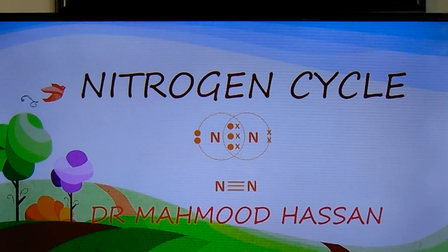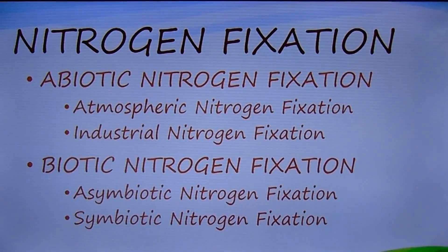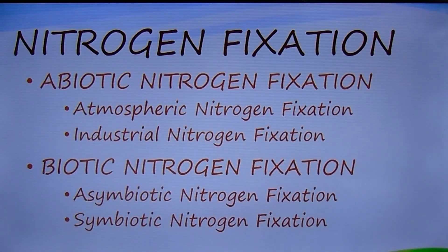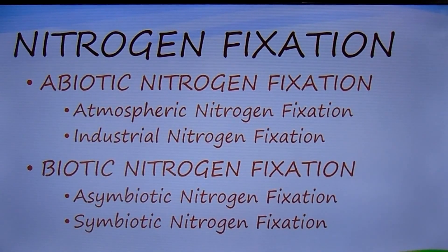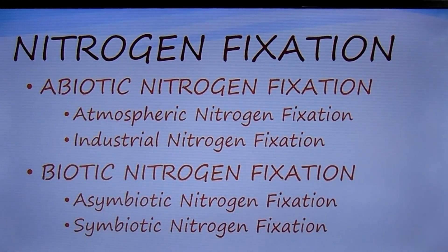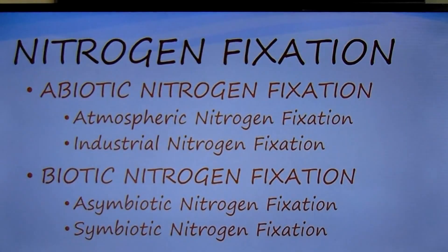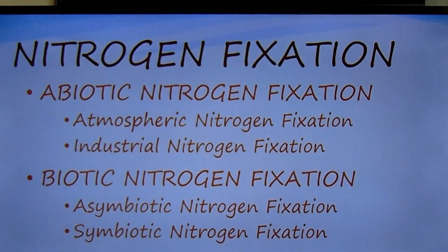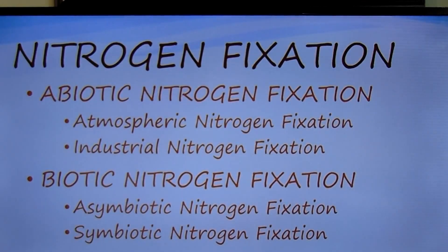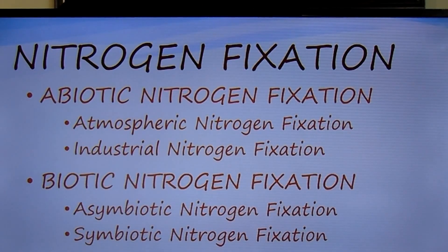I will answer that question at the end of this lecture, so keep watching. Don't forget to subscribe to the channel Biology for All. Nitrogen is fixed both abiotically and biotically. Abiotic fixation of nitrogen occurs during thunderstorms and through industrial processes to form nitrogen fertilizers. Living organisms also fix atmospheric nitrogen — some live independently while others have developed symbiotic associations.